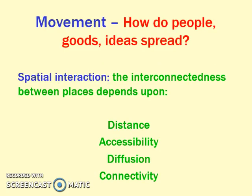Movement is another theme of geography — how do people, goods, and ideas spread? Diffusion should be a part of this. When we talk about people or ideas diffusing — cultural diffusion, migration — that's all part of the movement theme.